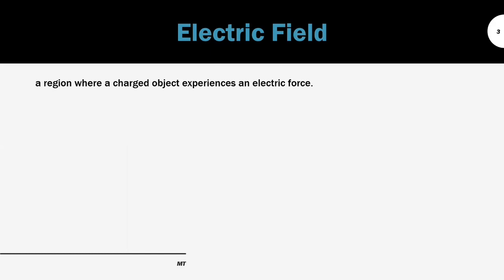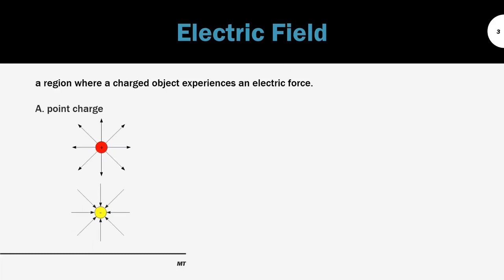So first, we begin with the definition. Electric field is a region where a charged object experiences an electric force. The electric field is produced by a charged object. For example, the point charge — we have the positive charge which produces electric field that is outward, and then we have also the negative charge which produces an electric field that is inward to the charge.